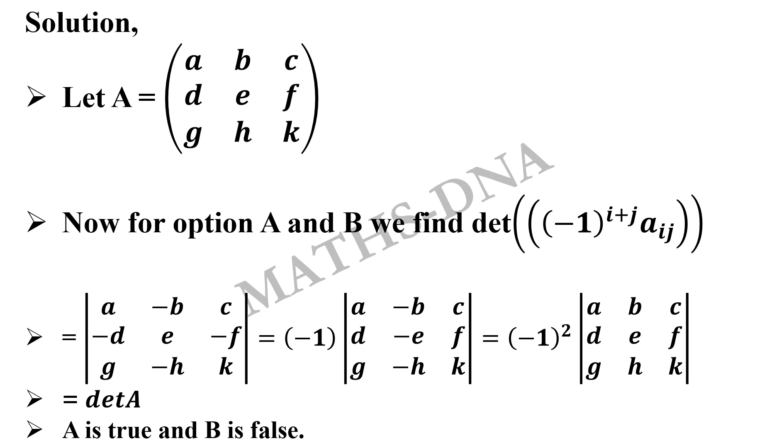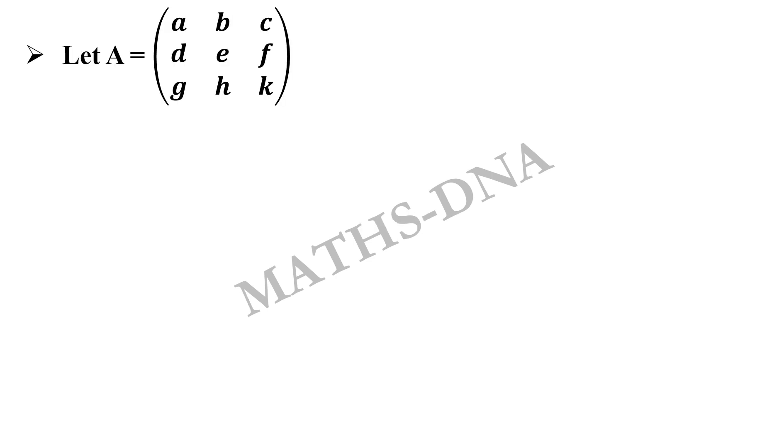Now similarly for option C and option D, we have to find the value of determinant of under root of minus 1 raised to i plus j Aij. Simply take minus 1 as i square and root of i square will be i. Now here i is a complex number whereas the power i plus j is the entry of row and column.